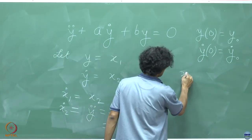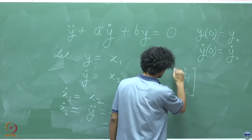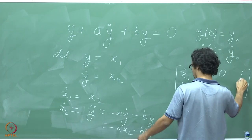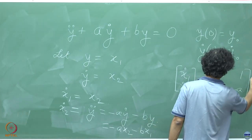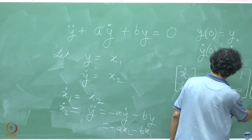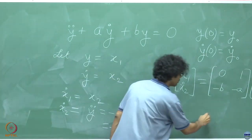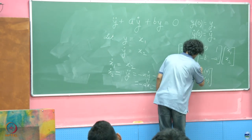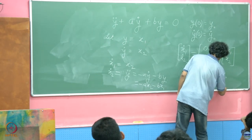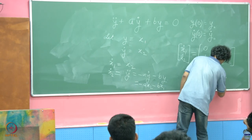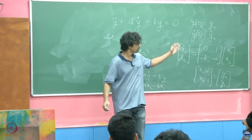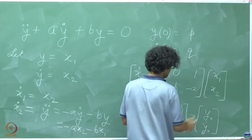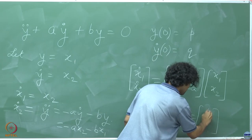We can write this in matrix form: the vector [x1 dot, x2 dot] equals the matrix [[0, 1], [minus b, minus a]] times [x1, x2]. This is the same system. With initial conditions x1(0) equal to P and x2(0) equal to Q, where we use P and Q instead of dot notation to avoid confusion.